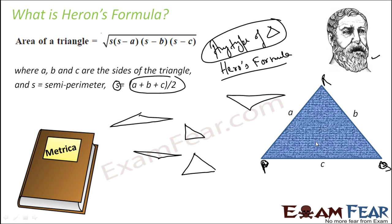Let us understand. Heron's Formula is a formula by Heron of Egypt. This guy was from Egypt, place Alexandria. And he gave a formula to find area of any triangle.